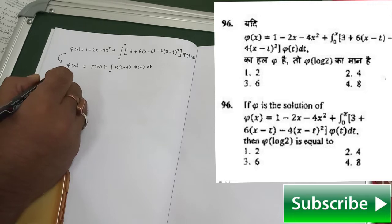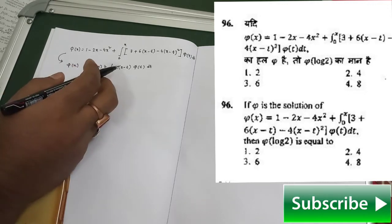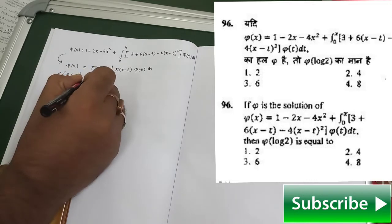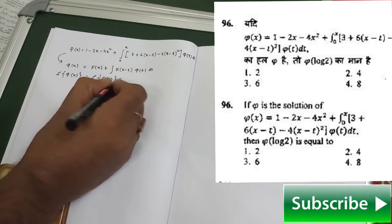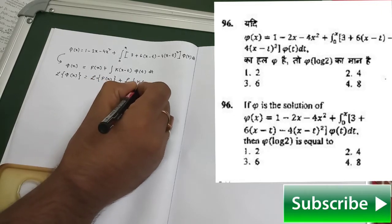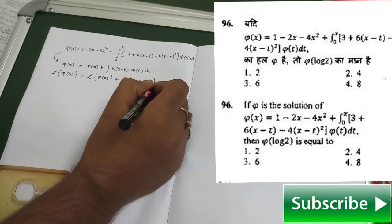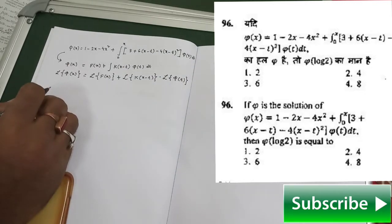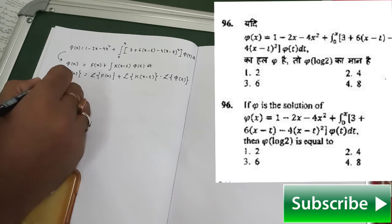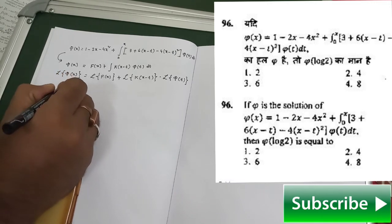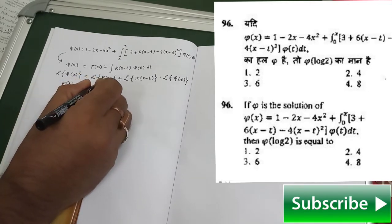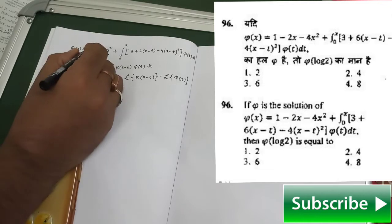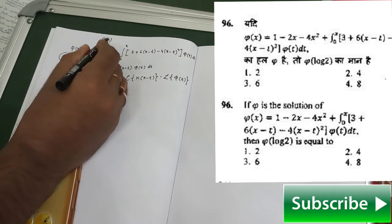Let us apply Laplace transformation on both sides. Then we have: Laplace transform of φ(x) equals Laplace transform of f(x) plus the Laplace transform of k(x−t) times Laplace transform of φ(t). Let us denote the Laplace transform of φ as F(p). The Laplace transform of f(x) is the Laplace transform of 1 minus the given f(x) terms.